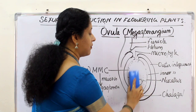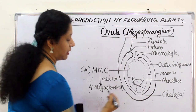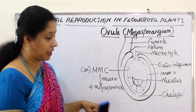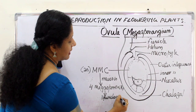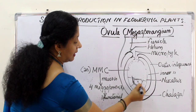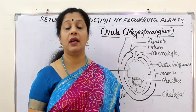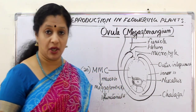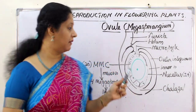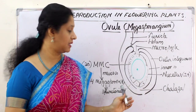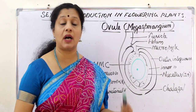Out of four cells, only one is left. The four megaspores are haploid because they are products of reduction division. Out of these, only one functional megaspore remains — the one at the chalazal end. It is called the functional megaspore because it is going to develop into the new embryo sac.